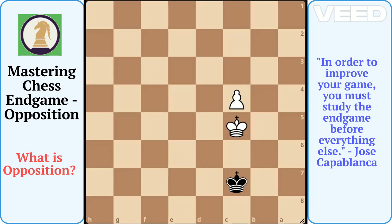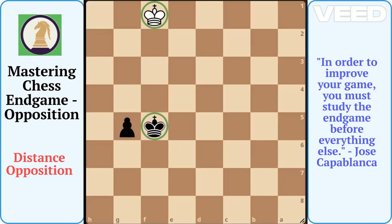Here are the main types of opposition. Direct opposition: the kings are on the same rank, file, or diagonal with one square in between them. Distance opposition: the kings are separated by an odd number of squares on the same rank, file, or diagonal. Here the kings are separated by three squares on the same file.